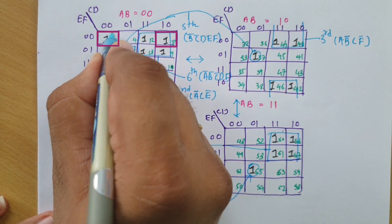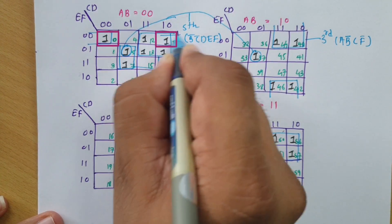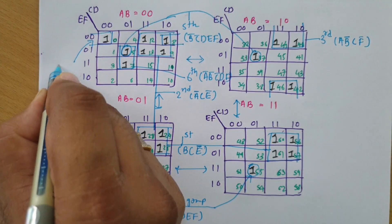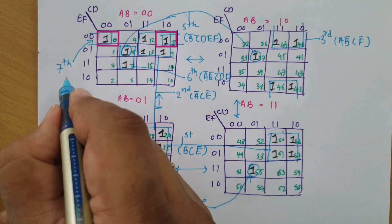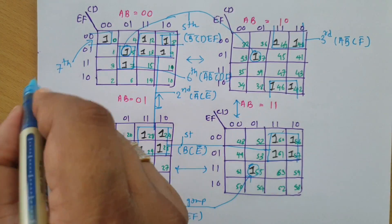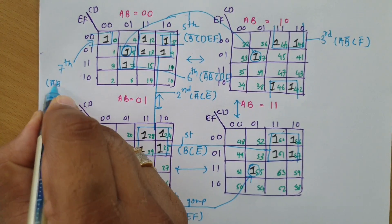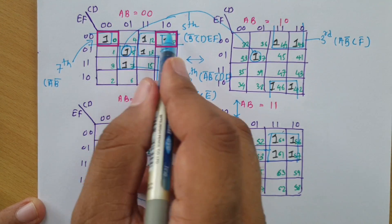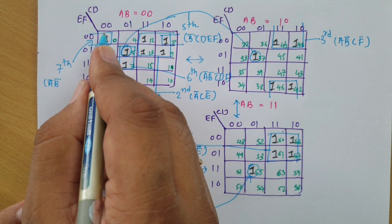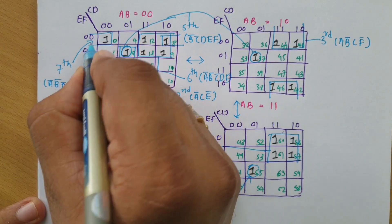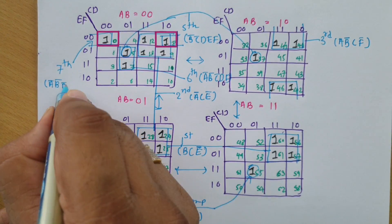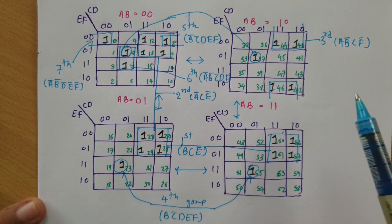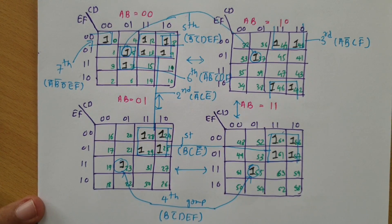The last remaining cell can be covered by this and this cell — that is my seventh group. In this seventh group, AB is 00, so Ā·B̄. CD is 00 and 10, so D is common at 0, meaning D̄. EF is 00, so Ē·F̄. Therefore, the seventh group gives Ā·B̄·D̄·Ē·F̄. All ones are now covered.